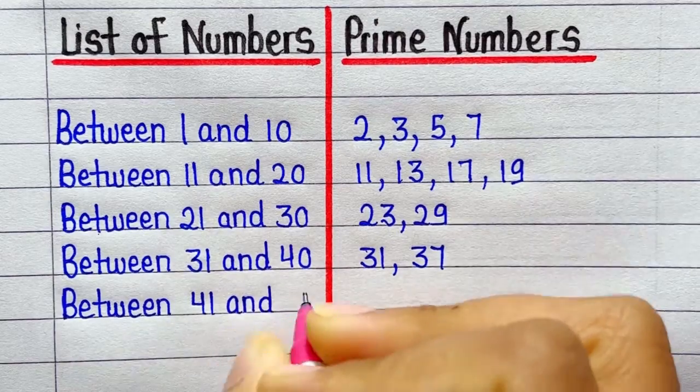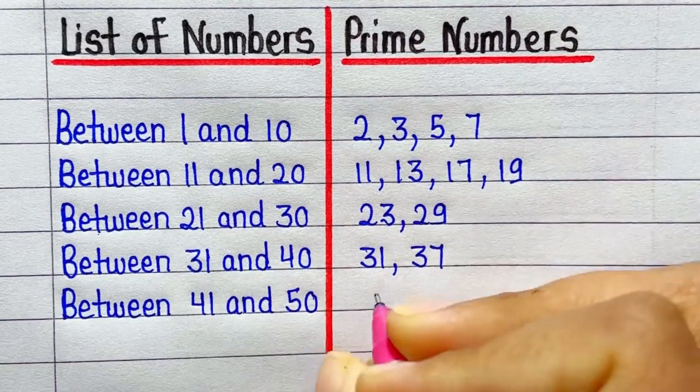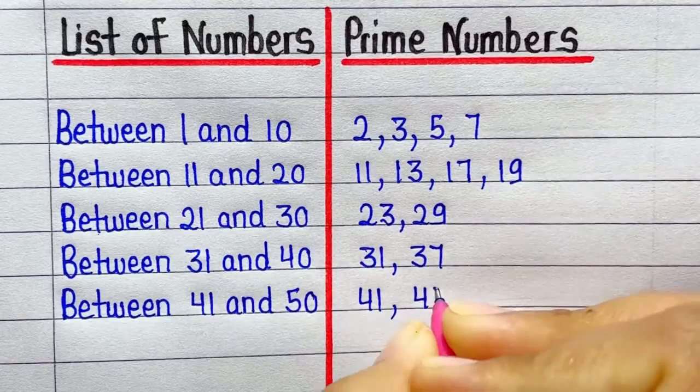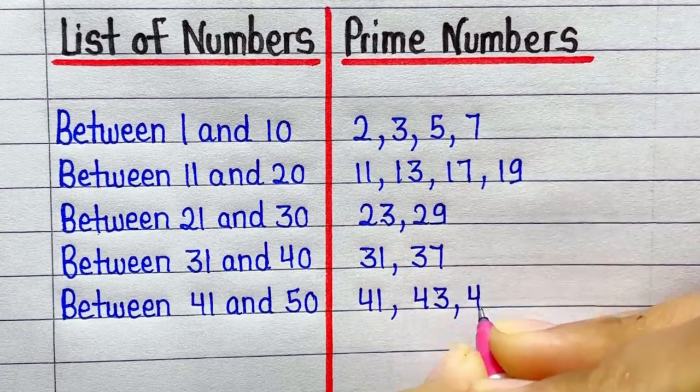Prime numbers between 41 and 50 are 41, 43, 47.